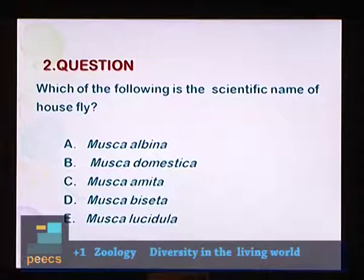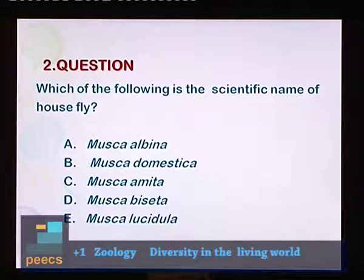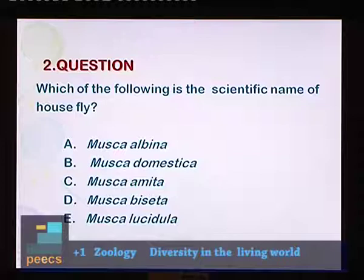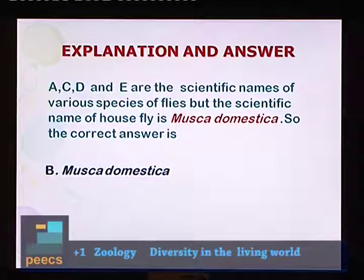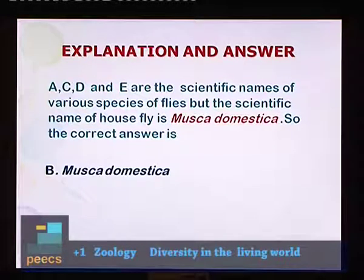Question 2: Which of the following is the scientific name of housefly? Options: A. Musca albina, B. Musca domestica, C. Musca amita, D. Musca bicetta, E. Musca lucidula. A, C, D, E are scientific names of various species of flies, but the scientific name of housefly is Musca domestica. So the correct answer is B — Musca domestica.